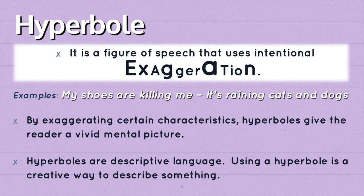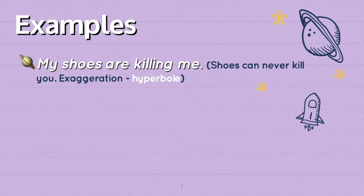So then we have hyperbole. What is a hyperbole? It is a figure of speech that uses intentional exaggeration — that's your key word right there. Examples: 'My shoes are killing me' or 'It's raining cats and dogs.' By exaggerating certain characteristics, hyperboles give the reader a vivid mental picture. Hyperboles are descriptive language — a creative way to describe something. Shoes can never kill you; this is exaggeration, and thus a hyperbole. It's raining cats and dogs can never happen in the real world — it's an exaggeration, and thus a hyperbole.